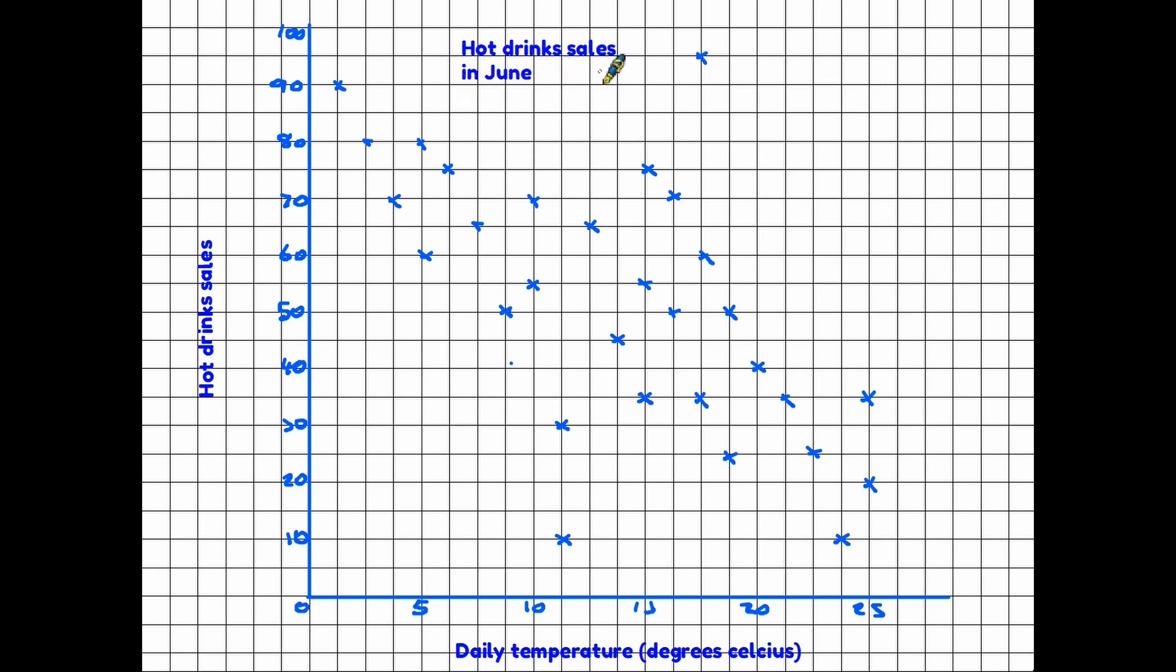Let's have a look at another scattergraph. This time it's all about hot drink sales in June - maybe a cafe selling hot drinks. The two sets of information that we have here are the daily temperature, so someone has recorded the temperature for each day in June and then made a note of how many hot drinks they have sold. Once again, we are trying to establish whether there is a connection between the two sets of information. It looks as though on the colder days the actual number of sales were higher, and on the warmer days, 20 to 25 degrees, the sales of drinks appear to be on the lower side.